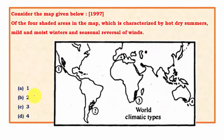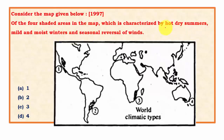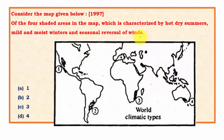The next question asks which of the four shaded areas on a map is characterized by hot dry summers, mild and moist winters, and seasonal reversal of winds. Hot dry summers and mild moist winters are characteristic features of Mediterranean type of climatic regions. The additional important term is seasonal reversal of winds.